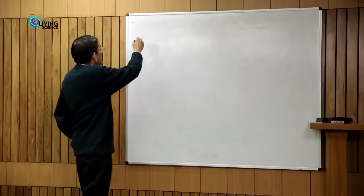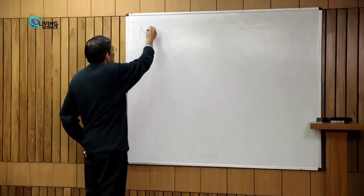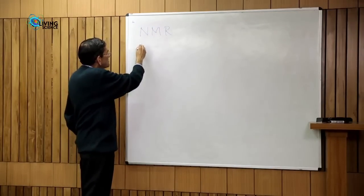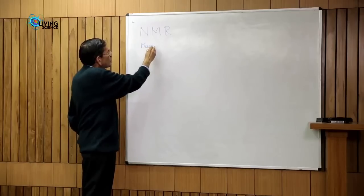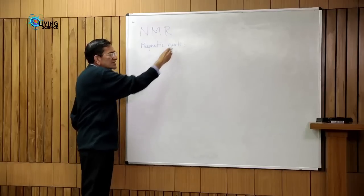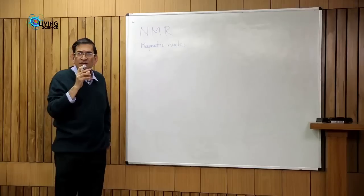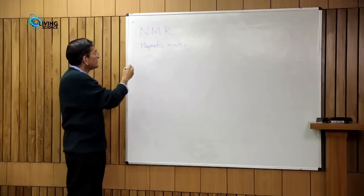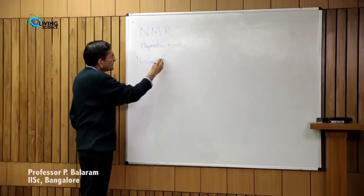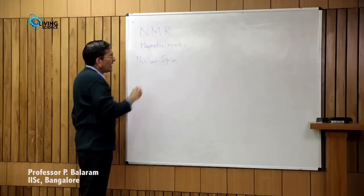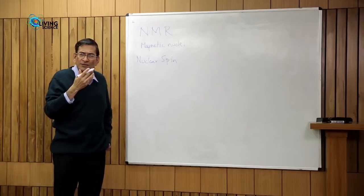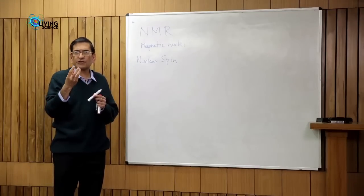NMR is a technique which is based on signals which come from magnetic nuclei. Every atom has a nucleus, but some atoms have nuclei which have the property of what is called nuclear spin. Nuclear spin really comes from physics — it is an intrinsic property of the nucleus.